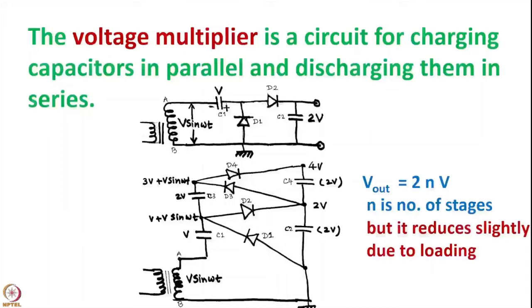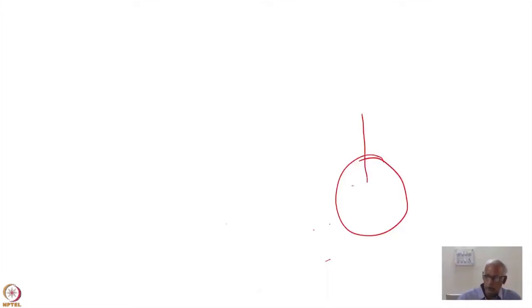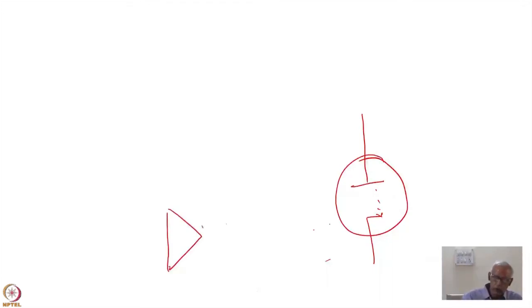Instead of resistance, diodes are used here. A diode has a property that in one direction it conducts. Earlier, a diode was always shown with an anode and a cathode — it was a vacuum tube device. But today the diode is shown as a solid-state device, a PN junction diode. This has a property that if one side is positive and this side is negative — that means you connect the battery like this — current will start flowing.